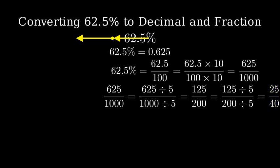We can divide by 5 again to get 25 over 40. And dividing by 5 one more time gives us 5 over 8.